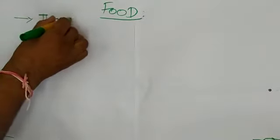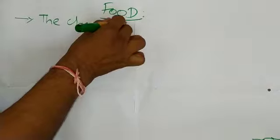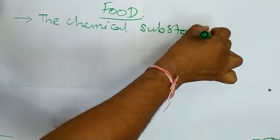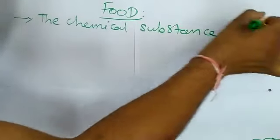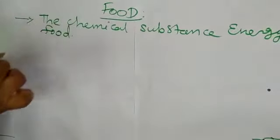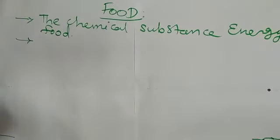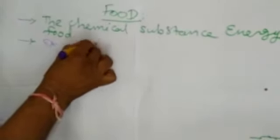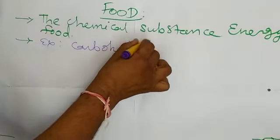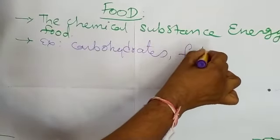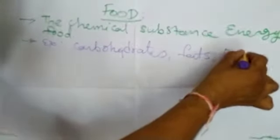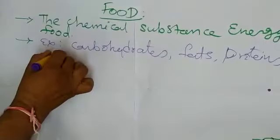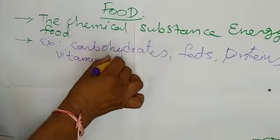What do you mean by food? Food can be defined as the chemical substances which provide us energy. These food materials include a wide variety of substances like carbohydrates, fats, proteins, vitamins, etc.